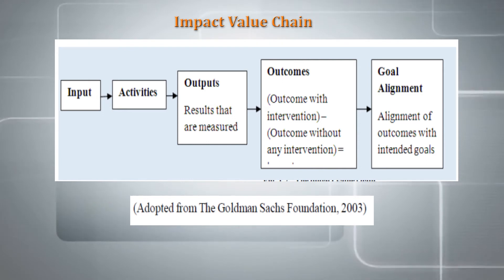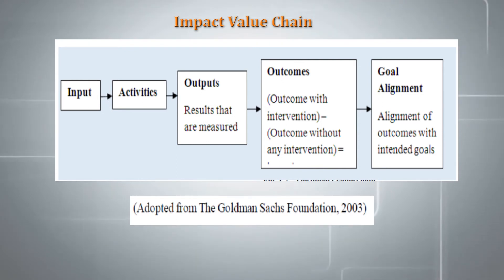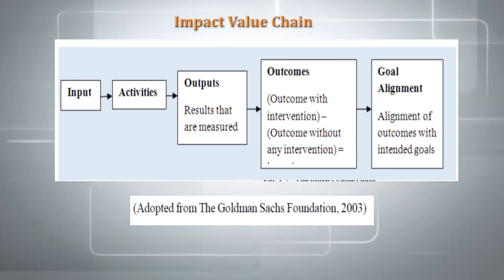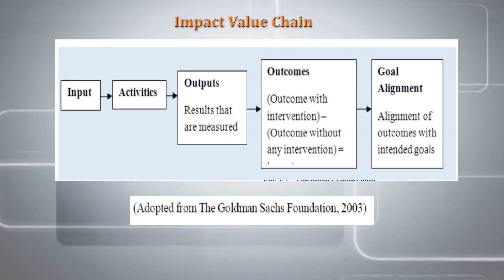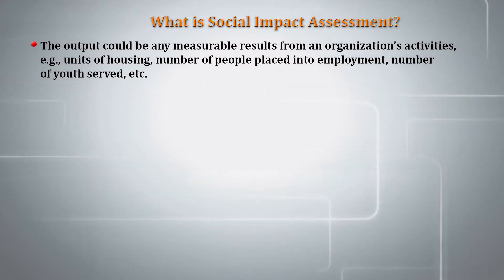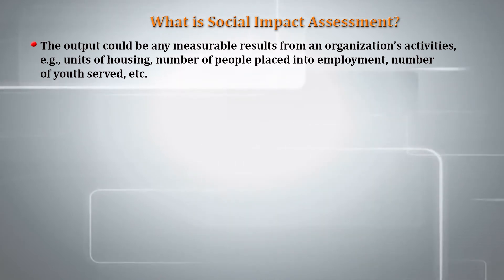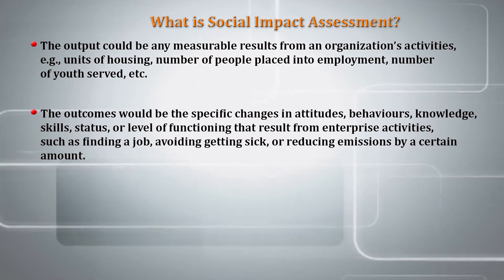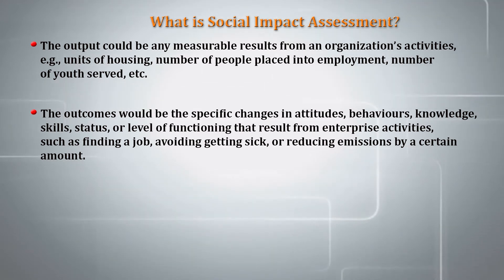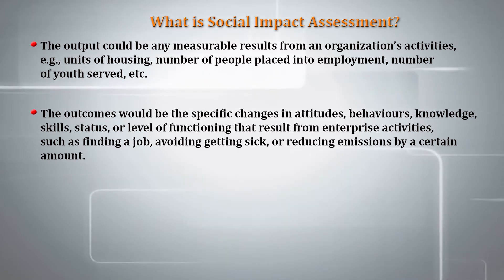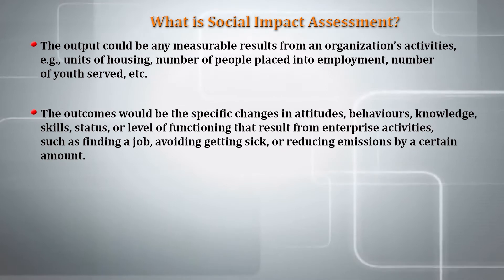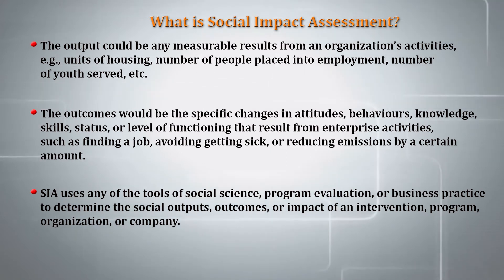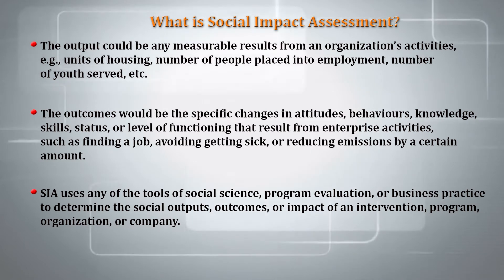A flowchart shows an impact value chain with input, activities, outputs, results measured, and outcomes — with or without intervention. Goal alignment refers to the alignment of outcomes with intended goals. The output could be any measurable result from an organization's activity, for example, units of housing, number of people placed into employment, or number of youth served. The outcome refers to specific changes in attitudes, behaviours, knowledge, skill, status and level of functioning resulting from enterprise activities, such as finding a job, avoiding illness, or reducing emissions by a certain amount. SIA uses tools of social science, programme evaluation or business practice to determine the social outputs, outcomes or impact of an intervention programme, organization or company.